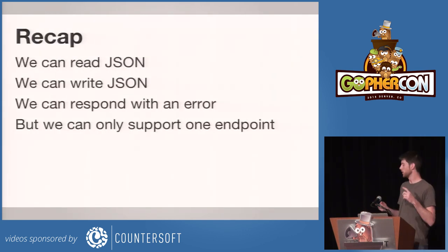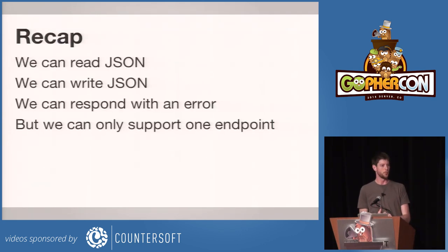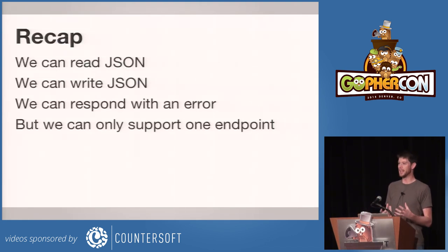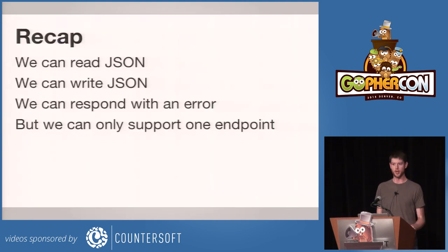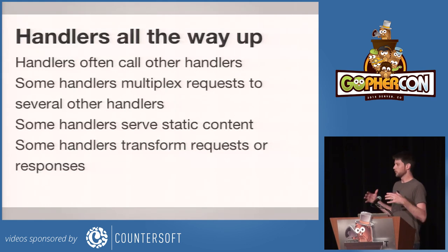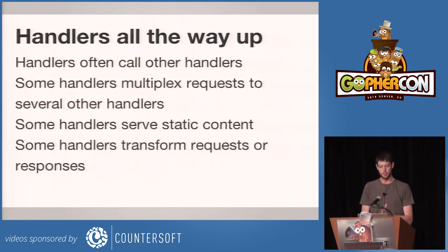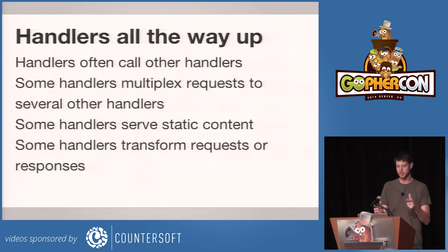So altogether, at this point we can read and write JSON, requests and responses flow without a lot of headache, we can respond with errors and it works just the same way. But at this point we only have one endpoint in our whole API, and that's — depending on who you talk to — either useless or microservices. The answer to getting from one to bunches, to huge web services like most people end up implementing, is it's handlers all the way up.